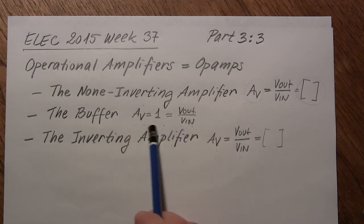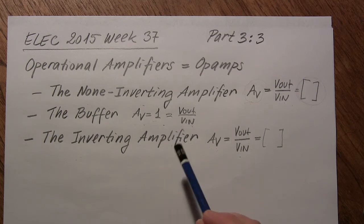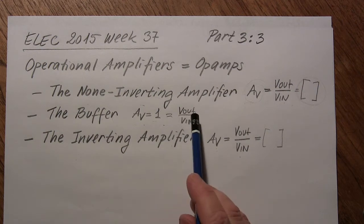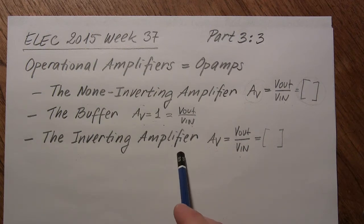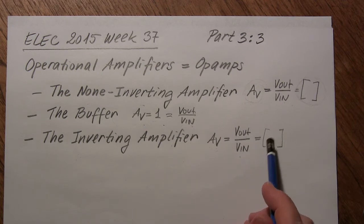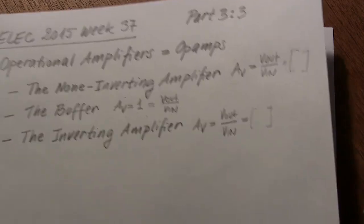The buffer has only a gain of 1, but it has some nice features that are good for sensors and interfacing to microcontrollers. We will look at how we find the expression for it and why we use it at all. For the non-inverting amplifier, we also hope to find an expression for the voltage gain related to the circuit components. Let's get started with the non-inverting amplifier.